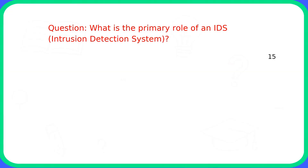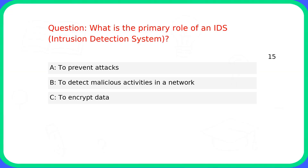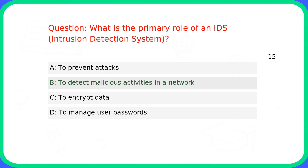Question: What is the primary role of an IDS (intrusion detection system)? Answer: B. To detect malicious activities in a network.